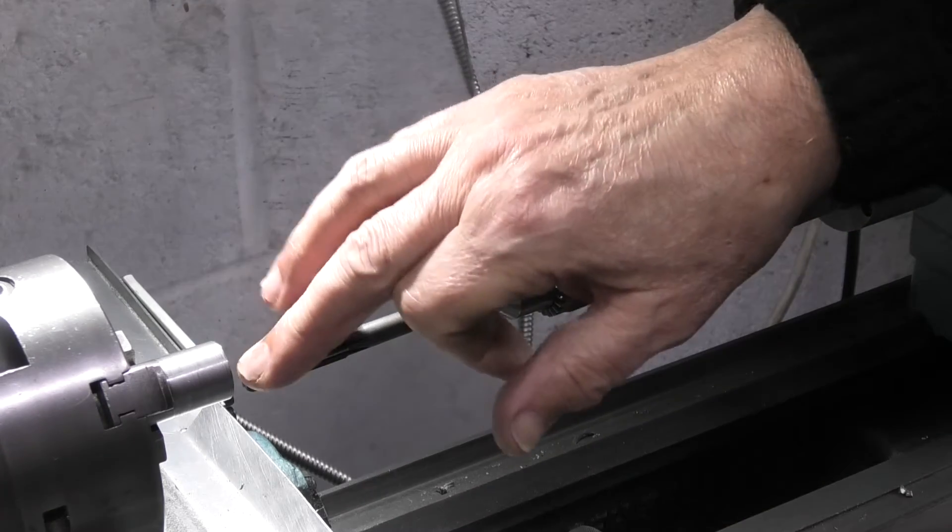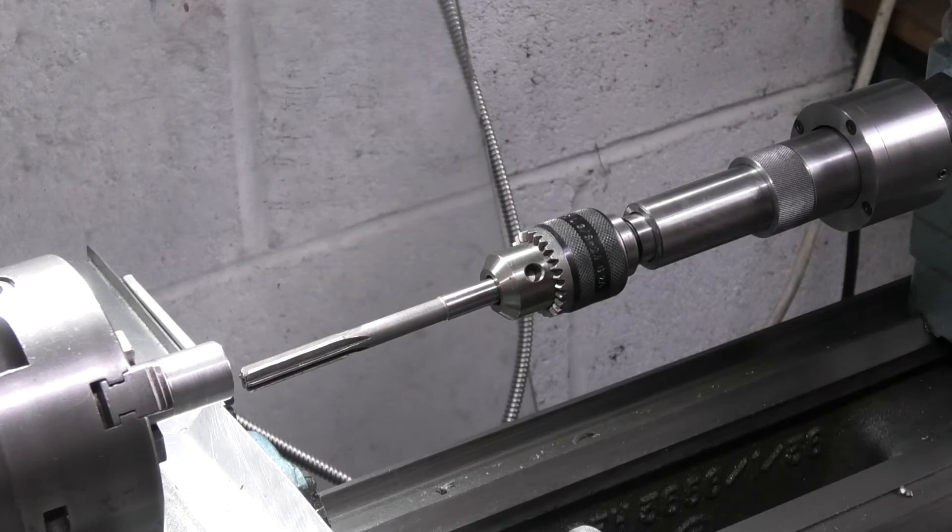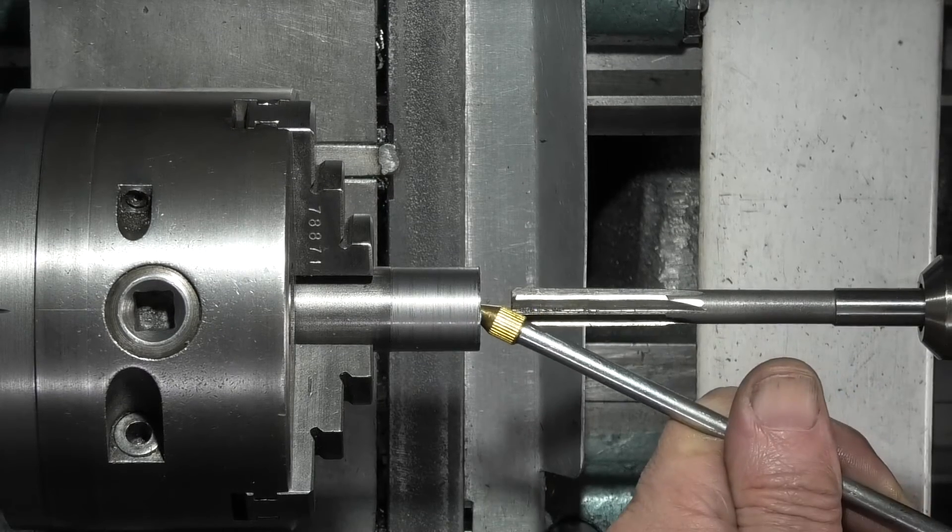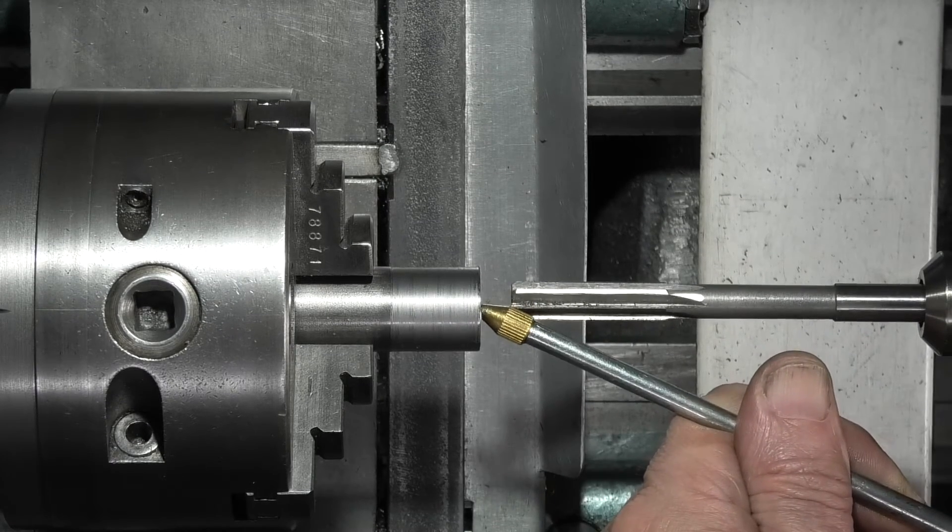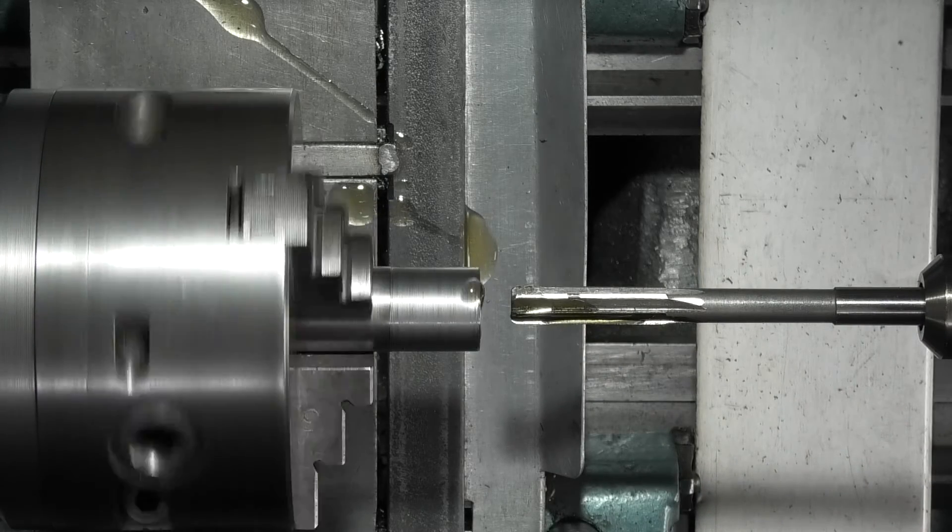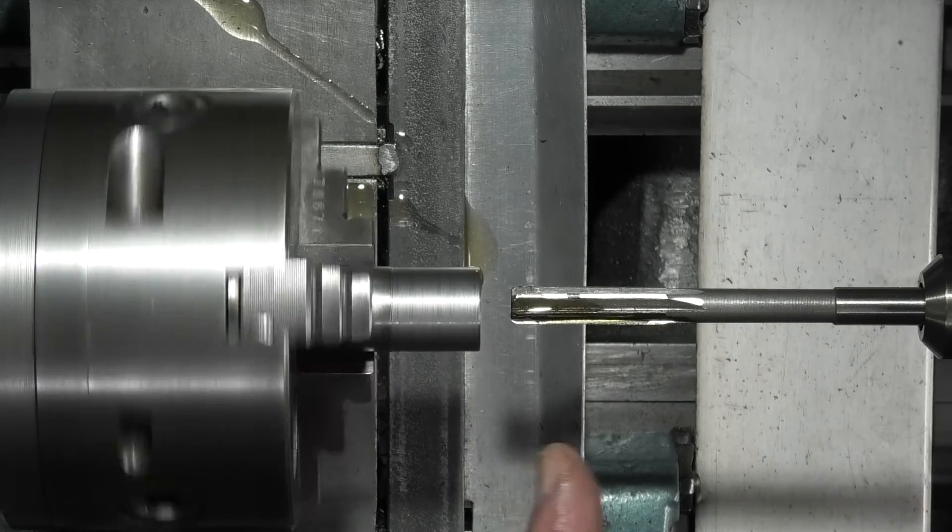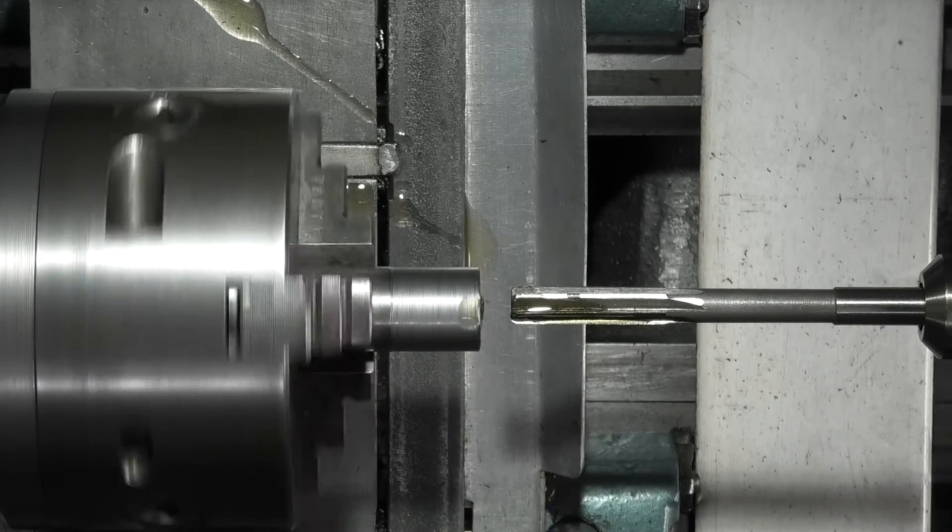So the first thing I want to do is put some oil on the reamer and just place it into the bore. A small amount of oil in the bore and on the reamer. And start the speed slow. And I'm not going full depth, I'm only going halfway into that bore.